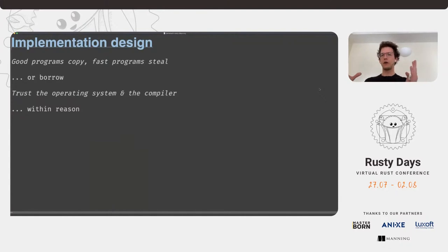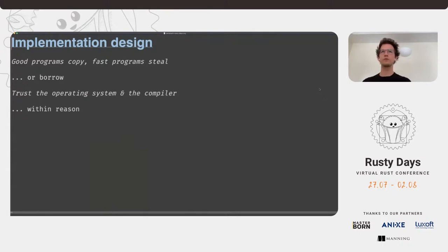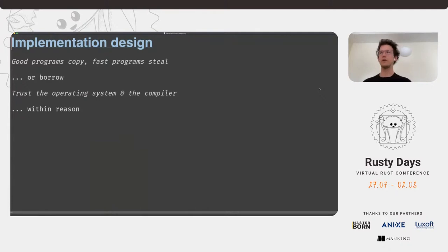Now we're comfortable with our primitives, so we should figure out how to design an implementation. One of the great things about Rust is that the implementation design can really follow good engineering principles. Good programs copy; fast programs steal or borrow. We don't want to copy data many times. Borrowing data makes accessing the same buffer very efficient and is statically checked by the Rust compiler, which is often the root of error in other languages. Another principle is to trust the operating system and the compiler to know the right thing within reason — they are generally smart, but not always smart enough to figure out exactly what you mean as a developer.